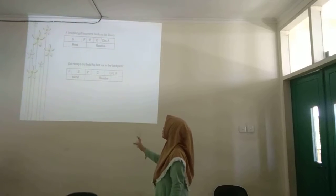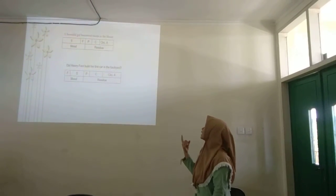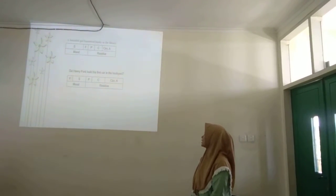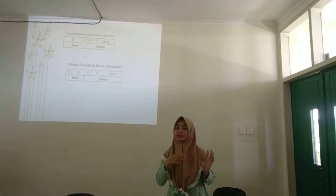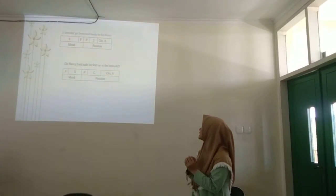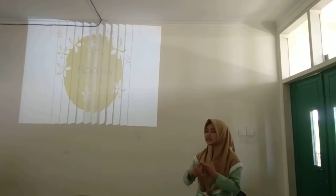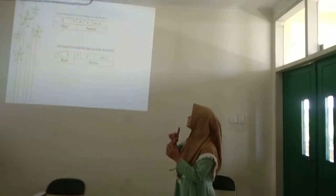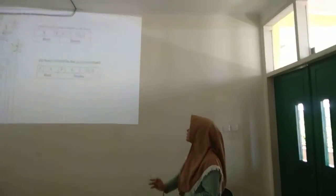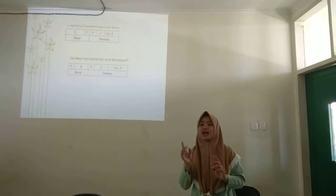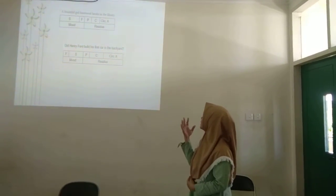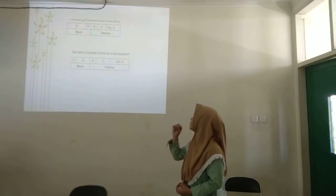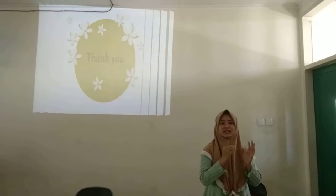So, this is an example of mood and residue in the text. The first one is beautiful girl borrowed books in the library. And the subject is a beautiful girl. And borrowed consists of finite and predicator. The finite is past. And book is a complement that is answer is or had of question. And in the library answer where beautiful girl borrowed books, that is a concept of circumstantial adjunct.